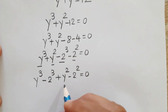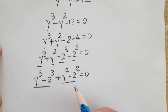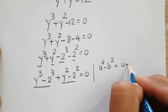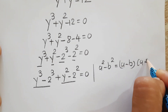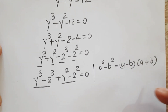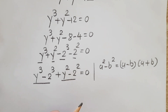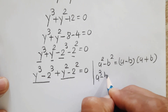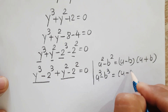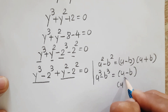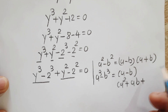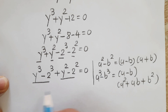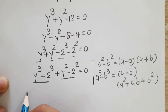Now we can apply factoring formulas. For a² - b², we can write (a - b)(a + b). Similarly, for a³ - b³, we can write (a - b)(a² + ab + b²). We will apply both of these formulas to our equation.